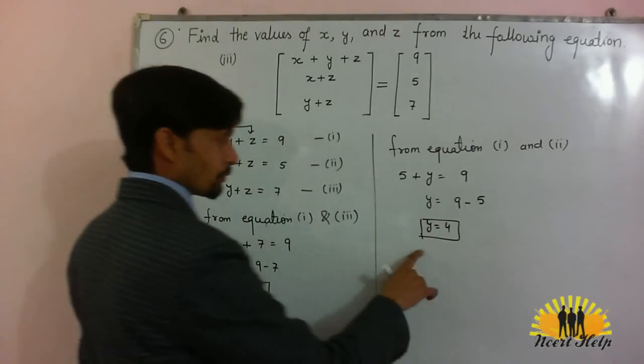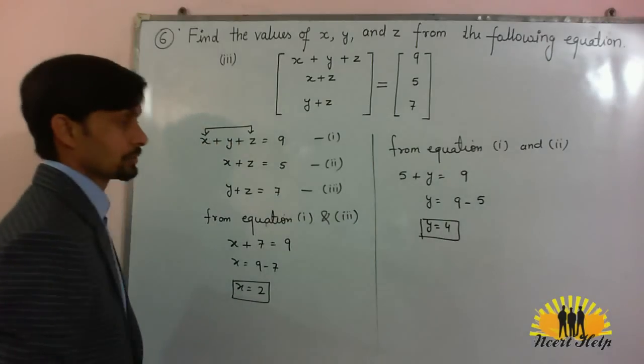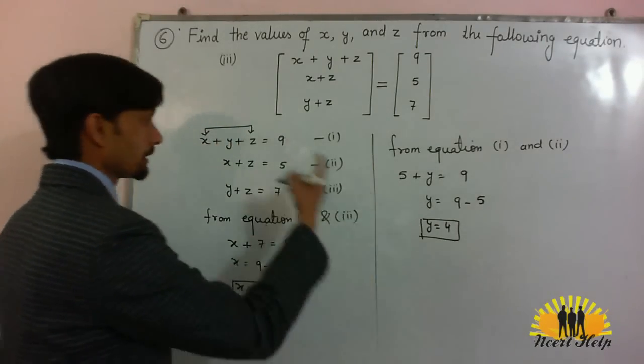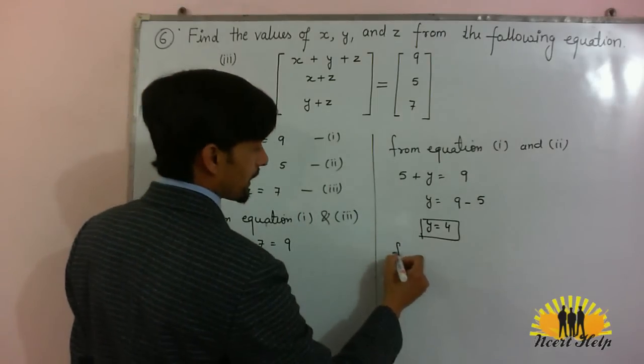So x is 2, y is 4. Now we have to find out the value of z. Put the value of x and y in equation number 1. Just try it.